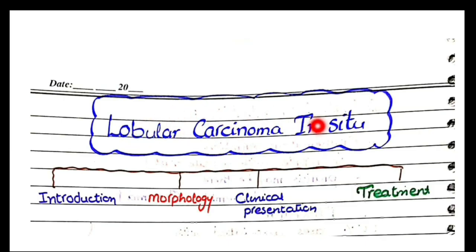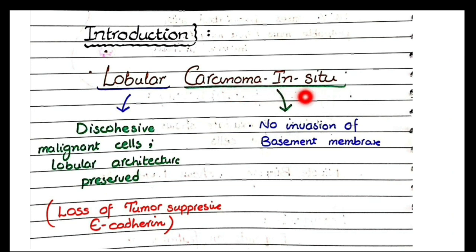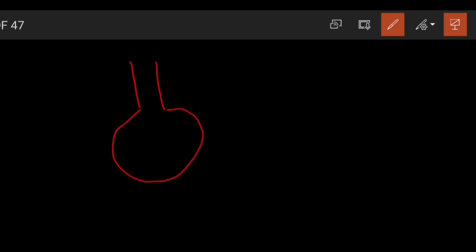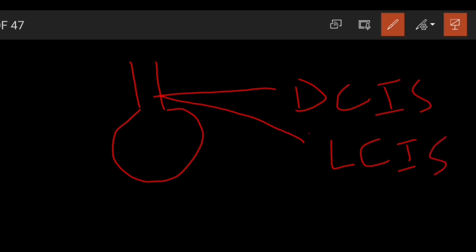Now let's discuss lobular carcinoma in situ under the same headings. The term 'carcinoma in situ' again means neoplastic cells not invading the basement membrane. Lobular carcinoma in situ also arises from the ducts — not from the lobule as many people mistakenly think. Both ductal and lobular carcinoma in situ arise from the same origin. The difference is that in ductal carcinoma in situ cells are closely adherent and convert the acinus into a duct-like structure.